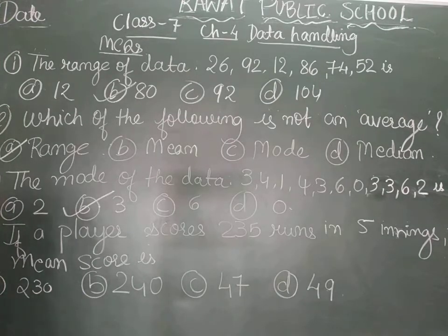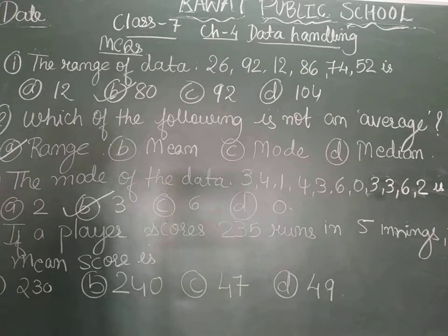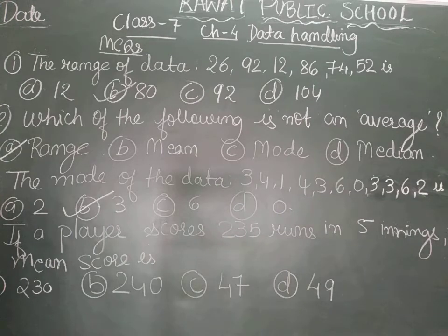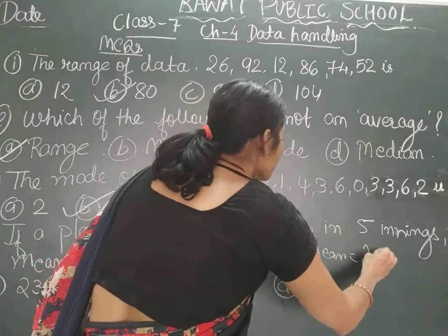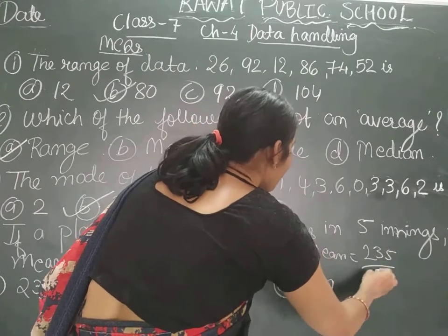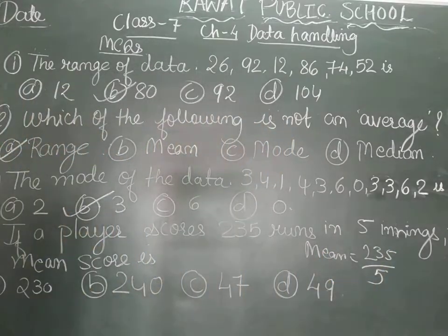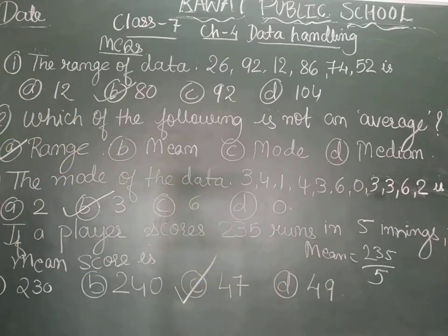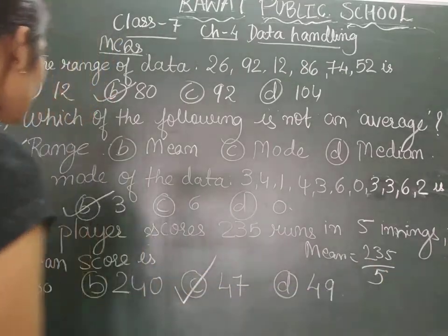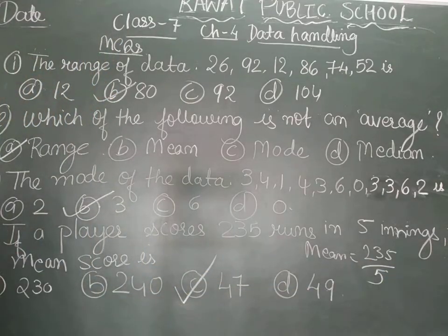The fourth question says: if a player scores 235 runs in 5 innings, then his mean score is? The mean formula gives us 235 divided by 5. 235 divided by 5 will give you 47. So, if a player scores 235 runs in 5 innings, his mean score will be 47.